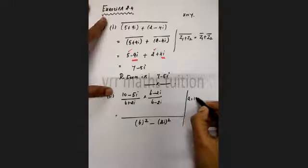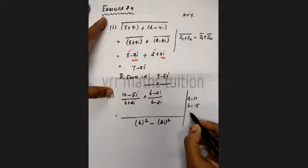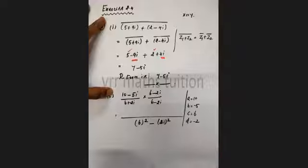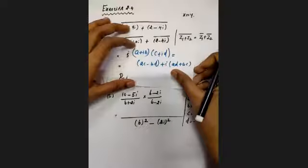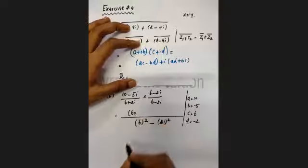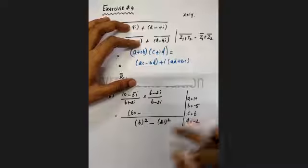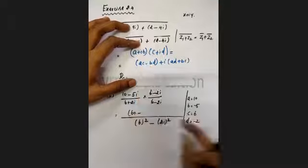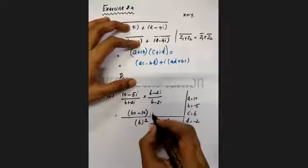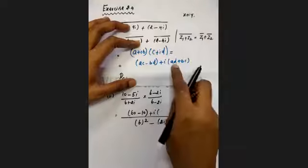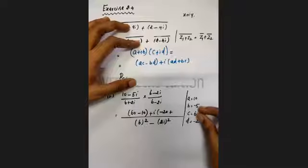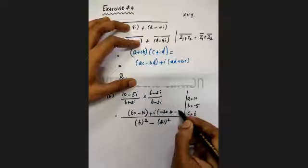So a equals 10, b equals minus 5, c equals 6, d equals minus 2. Substituting the formula: ac equals 10 into 6 equals 60, minus bd. Now for bd: minus b is 5, d is minus 2, so minus bd gives plus 10. For the imaginary part: ad is 10 times minus 2 equals minus 20, plus bc gives minus 30. So minus 30.